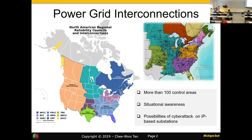The key message I want to bring across is that there is a control system in the power grid called the SCADA network — a centralized, hierarchical control network. The map on the top right can have hundreds of control areas, each operated by a different transmission utility. They all operate differently, but one thing in common is that we are all interconnected. Whatever happens in New York can propagate all the way to Florida or Montana.